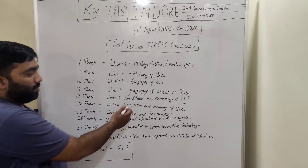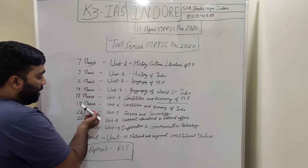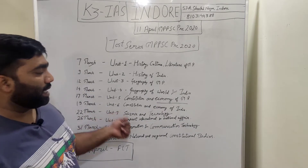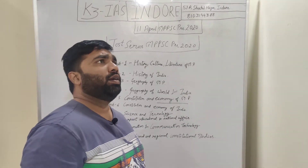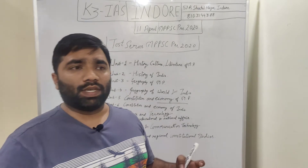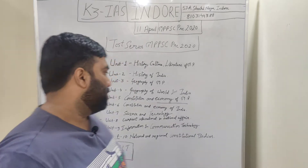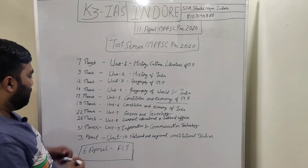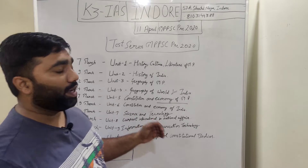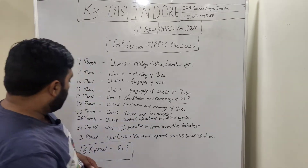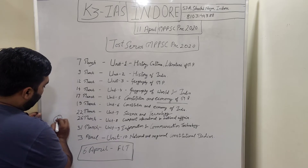19 March is Unit 6: Constitution and Economy of India. 22 March is Unit 7: Science and Technology — we need to focus on most of the syllabus, as some questions from this section reflect directly on the paper. Then we will focus on current international and national affairs, scheduled around 28 March.